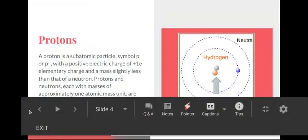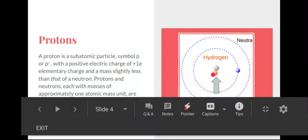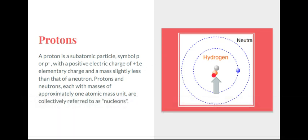Protons. A proton is a subatomic particle, symbol P or P-plus, because it has a positive electric charge of +1e. Here is the proton, the red one. And it has a mass slightly less than a neutron. Protons and neutrons, each with masses of approximately 1 atomic mass unit, are collectively referred to as nucleons.